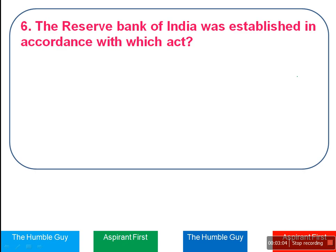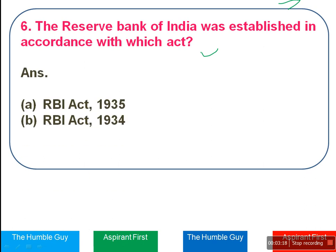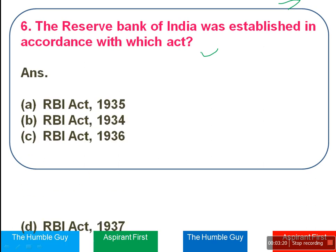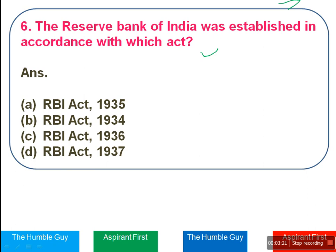Next question: The Reserve Bank of India was established in accordance with which act? It's very important — sometimes these questions come in exams. The options are RBI Act 1935, 1934, 1936, or 1937. The right answer is RBI Act 1934.